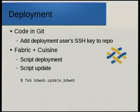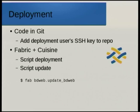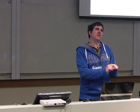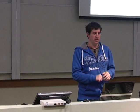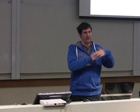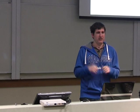For deployment, I keep all my code in Git. The deployment user has an SSH key generated without a passphrase, so when scripting the deployment it can use that key to retrieve the code from Git. I automate that deployment using Fabric and Cuisine. Fabric is a fairly low-level tool to run shell commands on a remote system — it uses the Paramiko SSH library internally and is written in Python. The actual scripts are in Python.